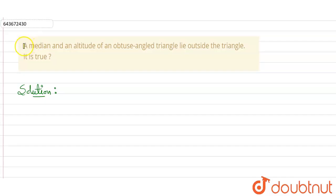Hello everyone. In this question it is given that a median and an altitude of an obtuse angled triangle lie outside the triangle. We have to state whether this statement is true or false.